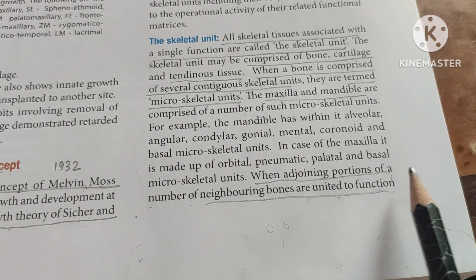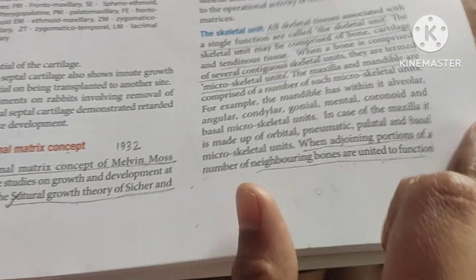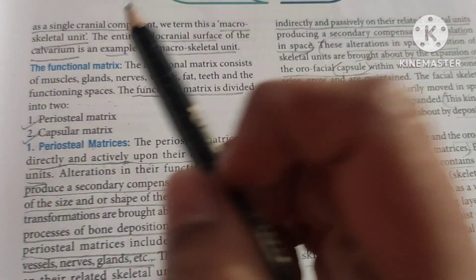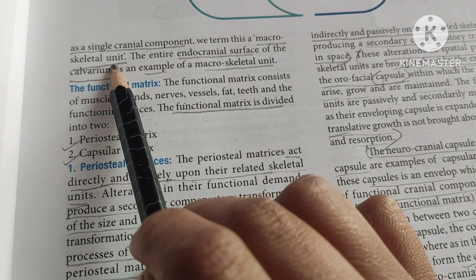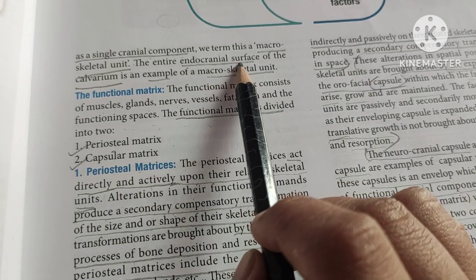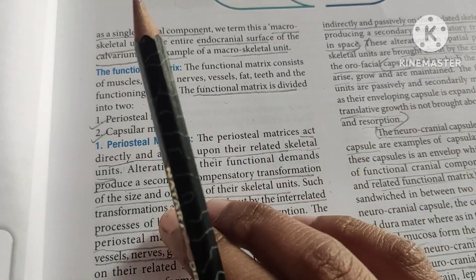When the adjoining portions of a number of neighboring bones are united to function as a single cranial component, we term this a macroskeletal unit. The entire endocranial surface of the calvarium is an example of the macroskeletal unit.